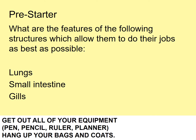So a bit of a recap on previous lessons we've done about the lungs and the small intestines. We haven't done about gills on fish yet, but what features do these structures have - the lungs, the small intestine, and in this case gills of fish - which allow them to do their jobs as best as possible? Remembering that the lungs need to get as much oxygen into the bloodstream as possible. The small intestine is trying to get as much glucose and minerals and digested food into the bloodstream, and the gills are really doing the same as the lungs. So try and think back: what are the structures in the lungs that help it to do its job, and what are the structures in the small intestine that help it to do its job?